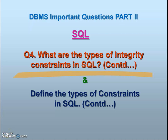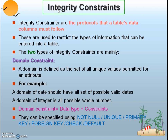This is DBMS important questions part 2, SQL question number four, a continuation of our previous video lecture on integrity constraints in SQL. In the previous lecture we discussed integrity constraints — the rules implied over tables — and noted there are two types. Under domain constraints we covered not null, unique, primary key, foreign key, check, and default. Primary key and foreign key were discussed in the previous lecture, linked via the i-button.